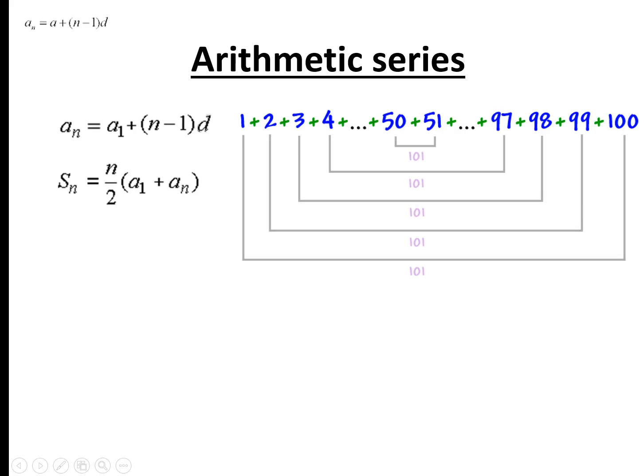And you can see this by looking at each pair of terms. Each pair, from the very first pair to the very last pair, the second pair to the second to last pair, it's all adding up to 101, which means from 1 to 100 you're going to have 50 pairs, and the sum will be 50 times 101, because they all add up to 101.